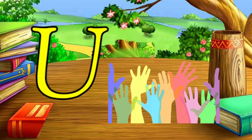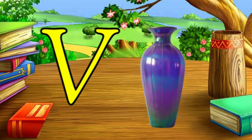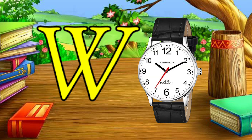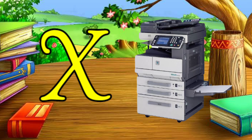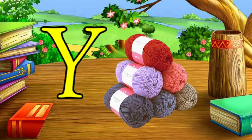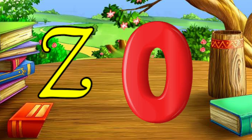U for union, V for vase, W for watch, X for Xerox, Y for yarn, Z for zero.